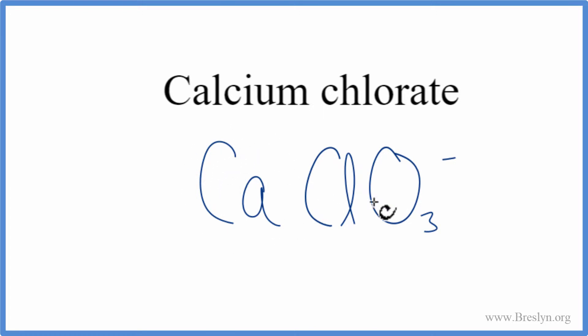Since we have a metal here, calcium, and then this chlorate is made up of nonmetals, we have a metal and nonmetals. That's an ionic compound. So we need to think about these charges here as we write the formula for calcium chlorate.